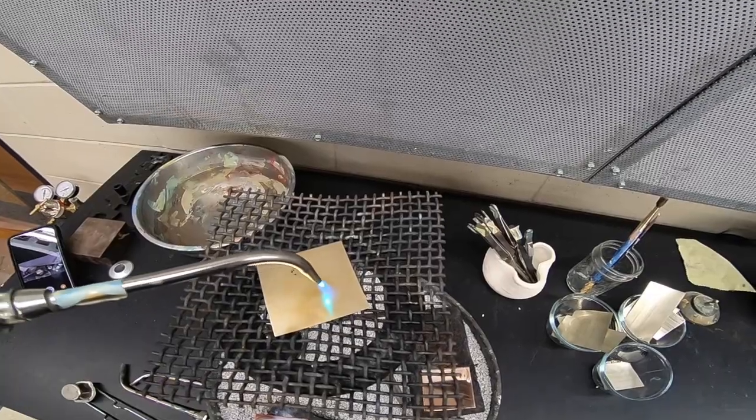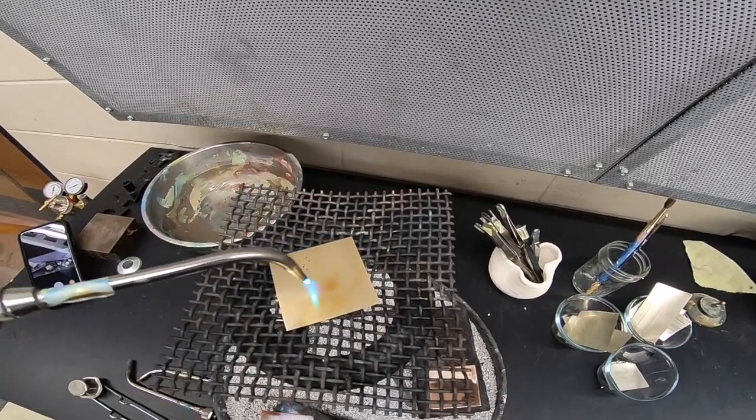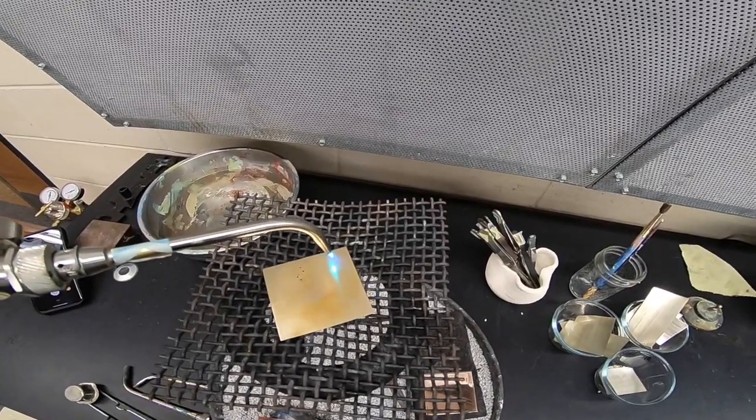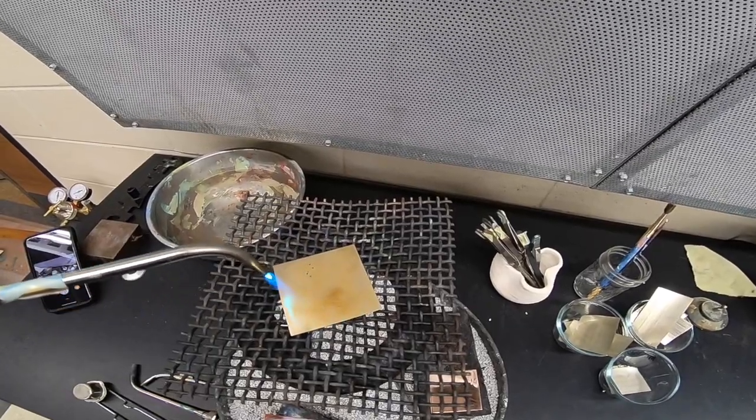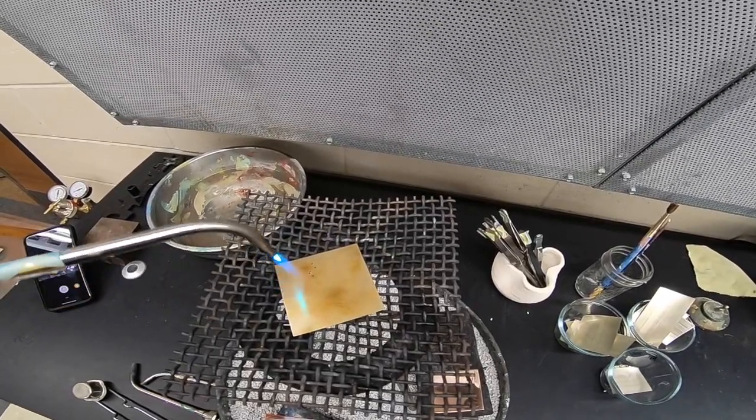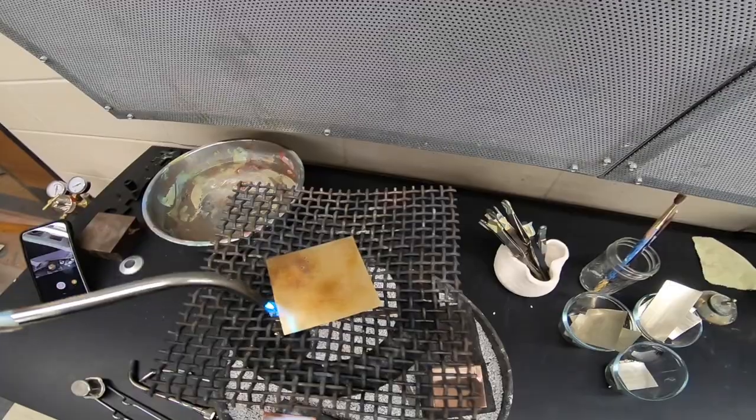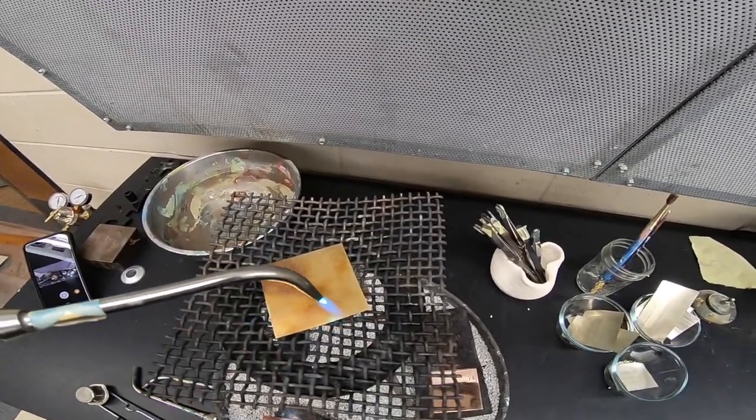You cannot sand and polish your metal after you add a heat patina because you can sand it off and it will go away. And you want to make sure that when your metal cools down that you're not doing a lot of touching to your metal because that will change the color as well.